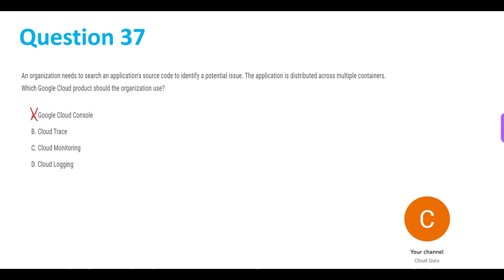Let's see why C and D are not the answers. C is Cloud Monitoring. Cloud Monitoring is basically a method of reviewing, observing, and managing the operational workflow in a cloud-based IT infrastructure. All you're doing is reviewing, observing, and managing the data. It is not essential in this question — all you need to do is search for the application's source code to identify the potential issue, which we can already do through Cloud Trace. So Cloud Monitoring is not the answer.